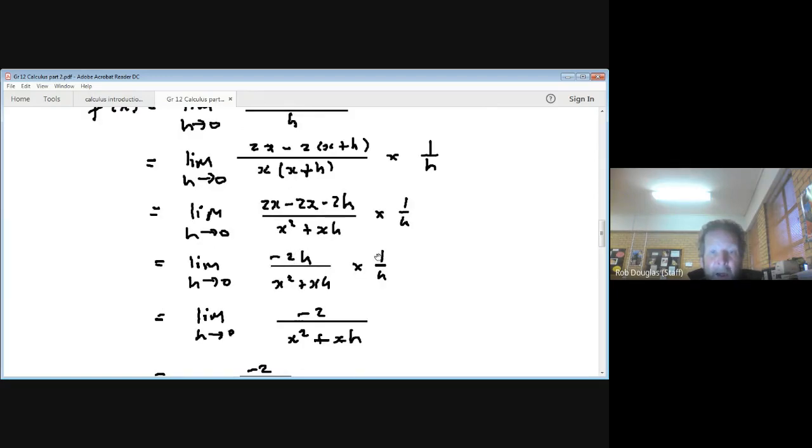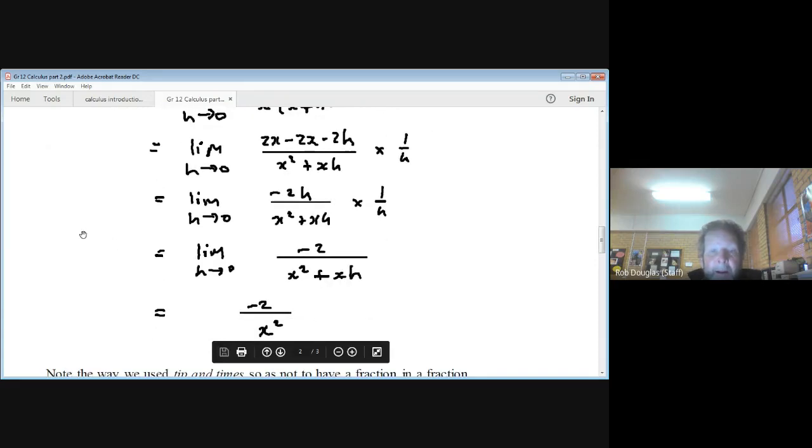Okay, now we've got minus 2h times 1 over h. Well, that h cancels with that h. You're just left with minus 2 in the top. Now, this is in a form where if we let h approach 0, we can work out what the answer is going to be. If we let h approach 0, we won't have 0 on the bottom because there's still x squared here. But 0 and something infinitely close to 0 multiplied by anything is going to be really close to 0. So this just falls away.